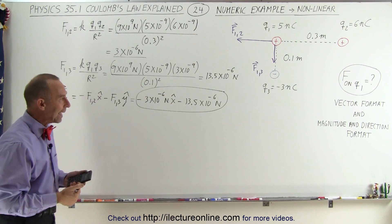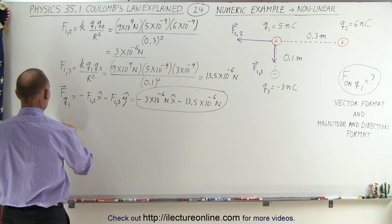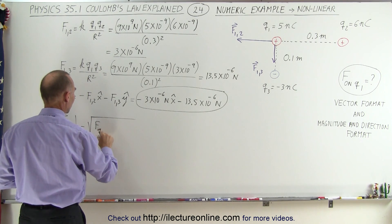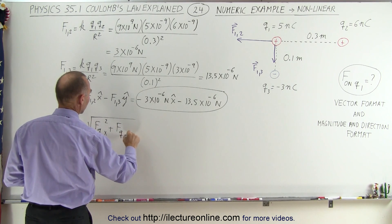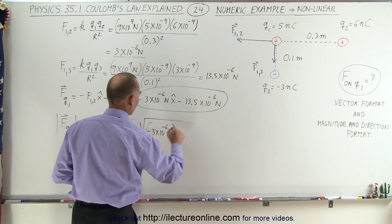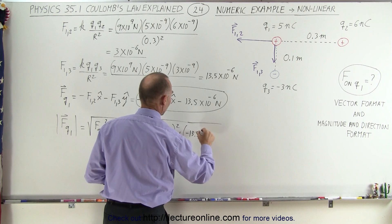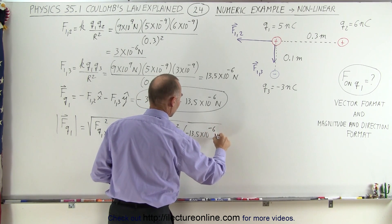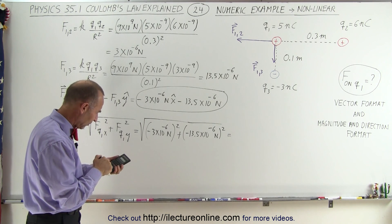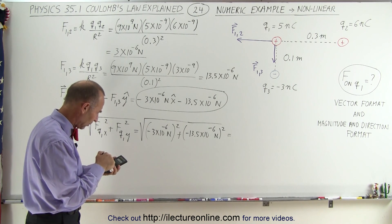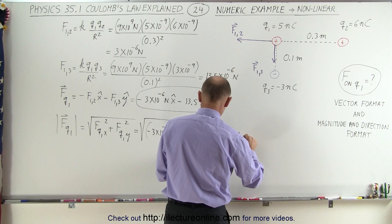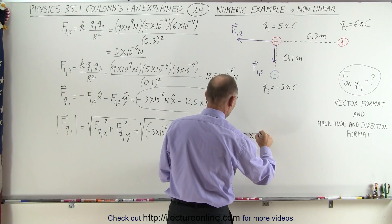If we want to write it in terms of magnitude and direction, we need to find the magnitude of that force. The magnitude of F on Q1 equals the square root of the x component squared plus the y component squared. That's the square root of (minus 3 times 10 to the minus 6 newtons) squared plus (minus 13.5 times 10 to the minus 6 newtons) squared. Calculating that gives us 13.8 times 10 to the minus 6 newtons — that is the magnitude of the total force.